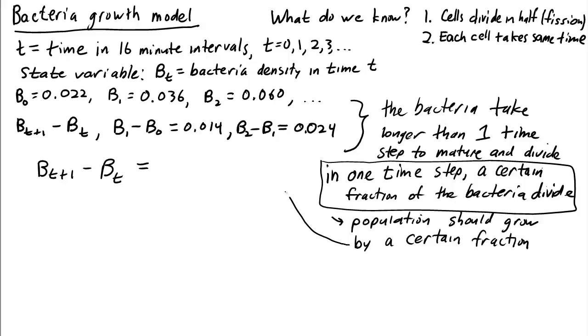This means that the population size should grow by a certain fraction of the original population size. In other words, this change here should be not exactly equal to the old population size, but proportional to it, where c is a parameter that is determined by how fast the bacteria divide in comparison to the time step. So we have a model here for population growth, and we just have one free parameter.